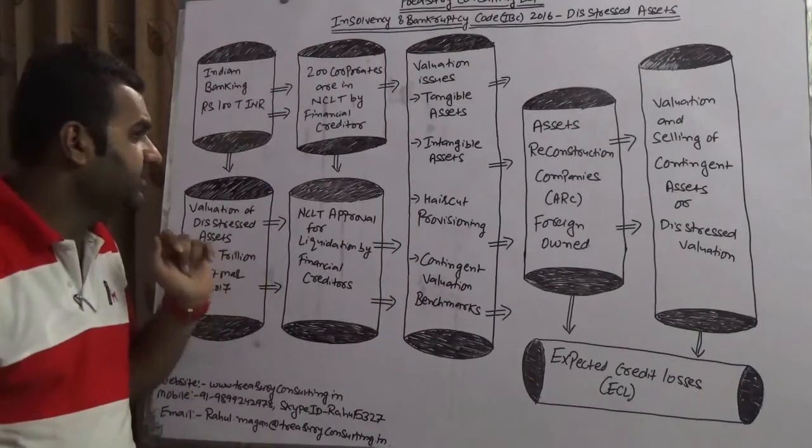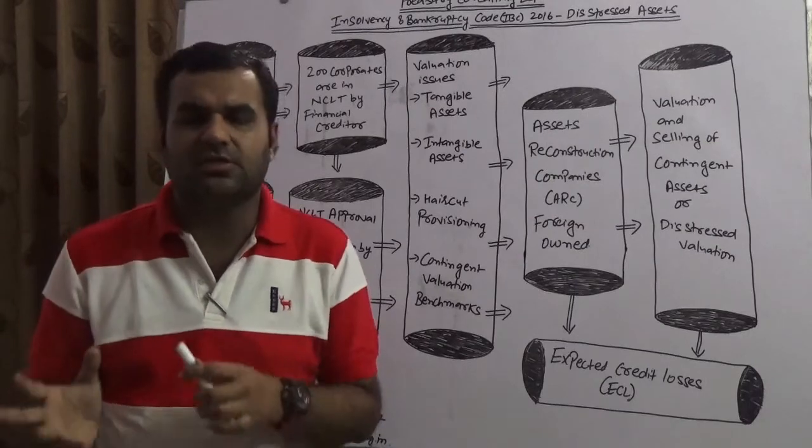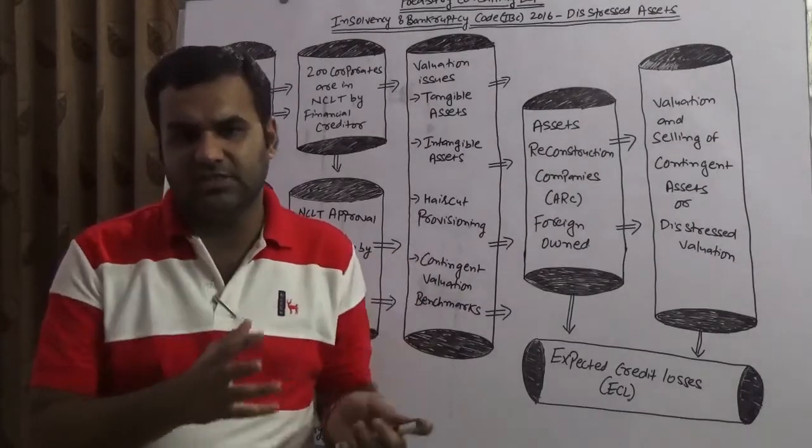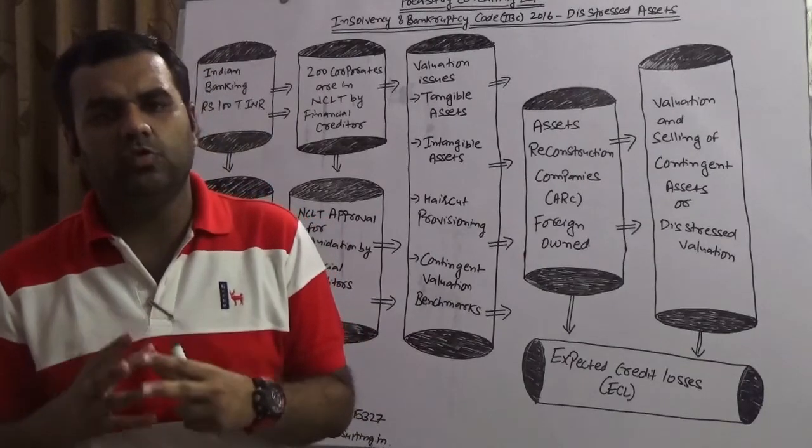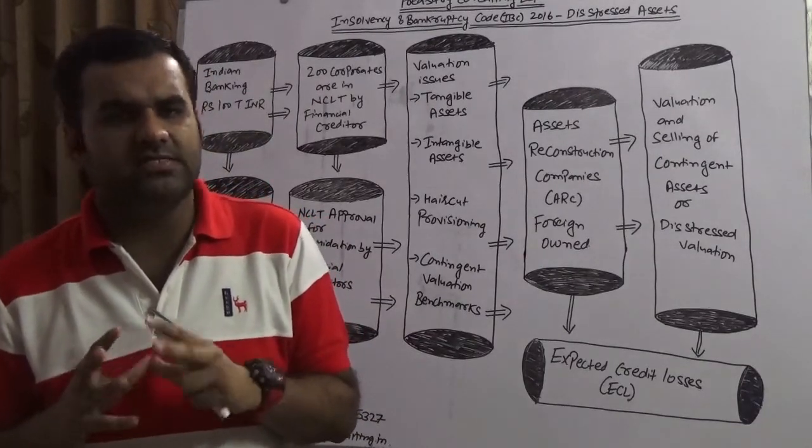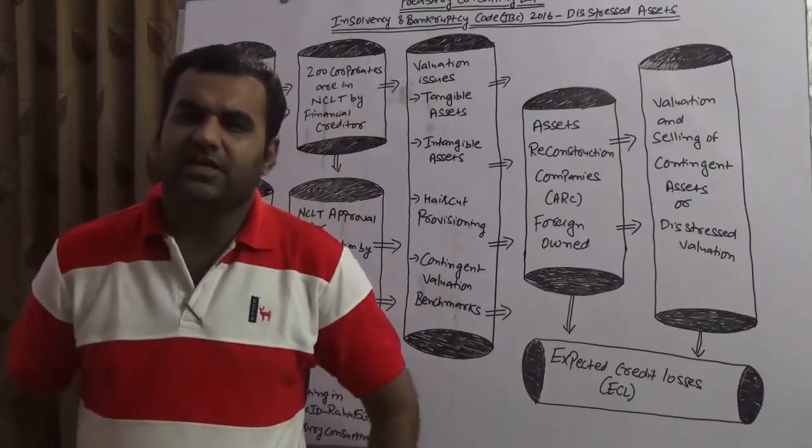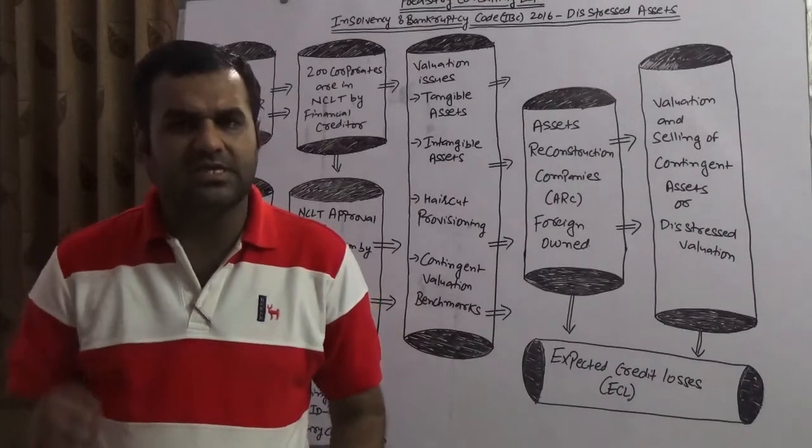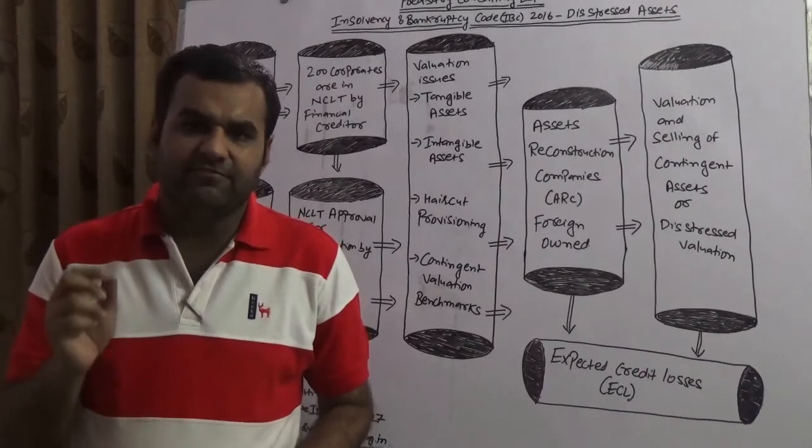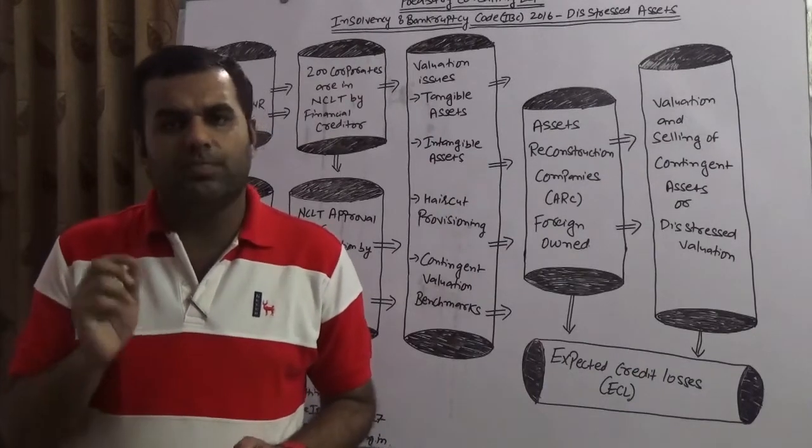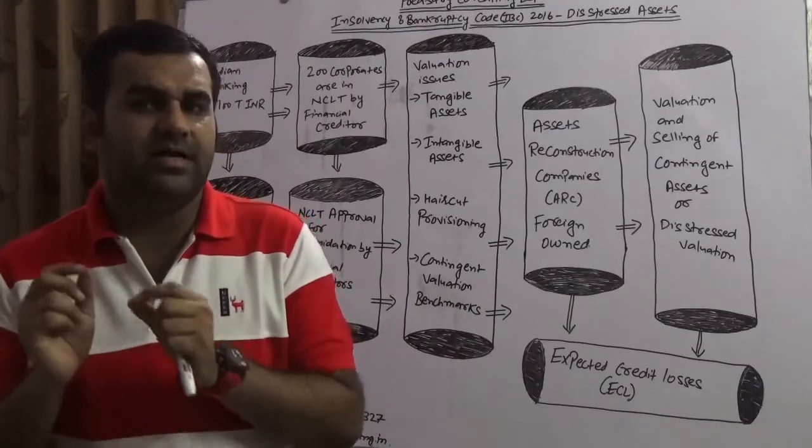If I go with the same research and as far as the newspapers are concerned, as far as the discussion on the various TVs like ETNOW, CNBC are there, approximately 200 Indian corporates are in NCLT which is National Company Law Tribunal. There are few companies which are in Appellate Authority also which is NCLAT, whereby either the financial creditor or the operational creditor is not in agreement with the judgment which has been given by the NCLT.